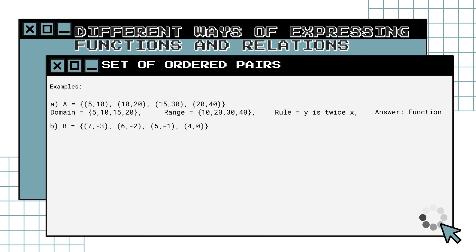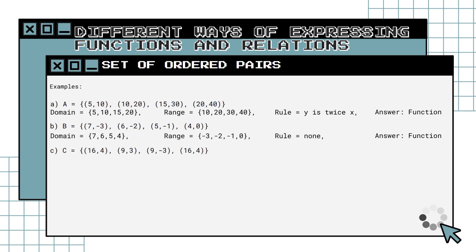Example B: extract the domain and range. Since no rule can be formulated from the given set, the rule is none. The given set of ordered pairs is a function, for there is no repetition of values in the domain. Example C: since there is a repetition in the domain, the set of ordered pairs is a relation.